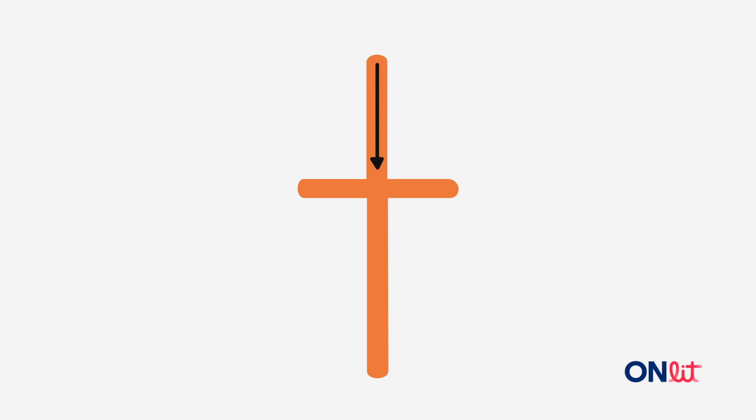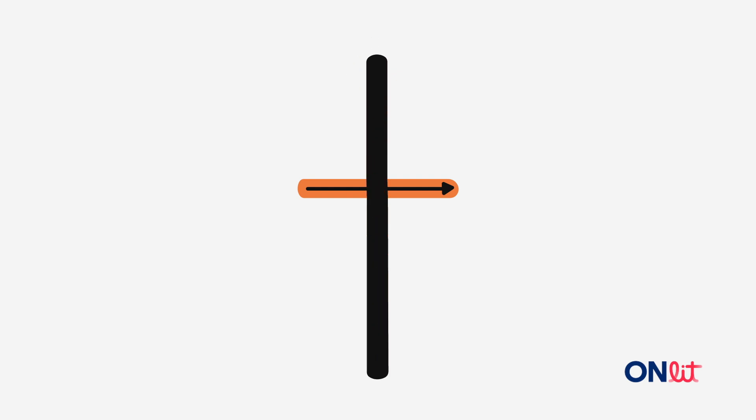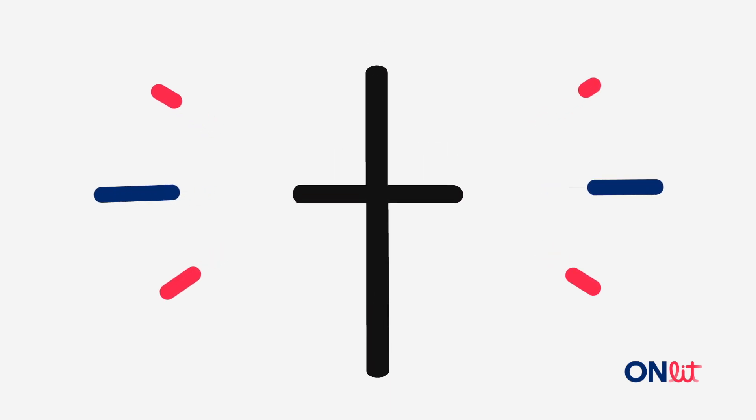To write the letter t, start at the top, go down, and across. Let's write t together now. Point to the top and go down and across. You did it. The letter t spells t like tiger.